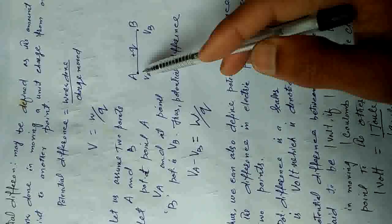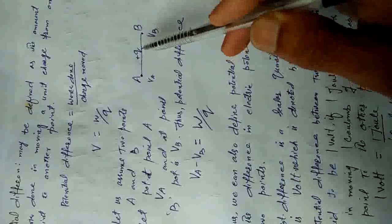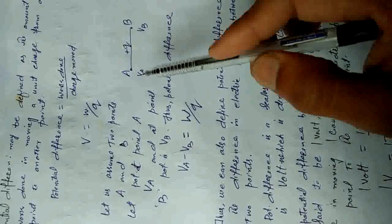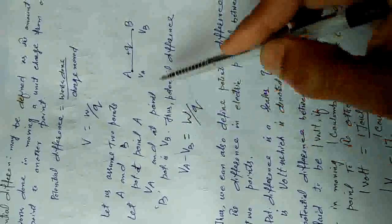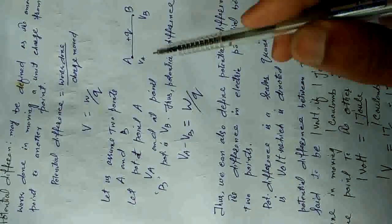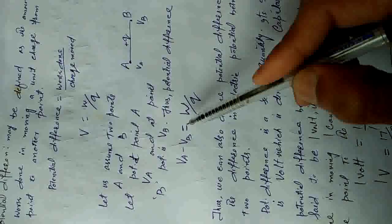Let us assume two points A and B. हम point A पर एक charge Q रखते हैं और उसे point B तक move करते हैं। The amount of work done required to move charge from point A to point B is known as potential difference. Let the potential at point A be Va and the potential at point B be Vb. Then potential difference Va minus Vb is equal to W divided by Q.